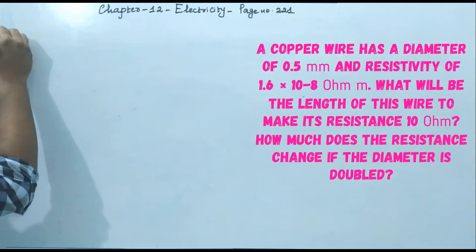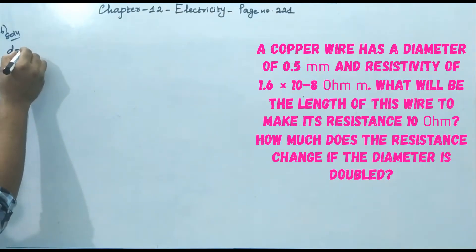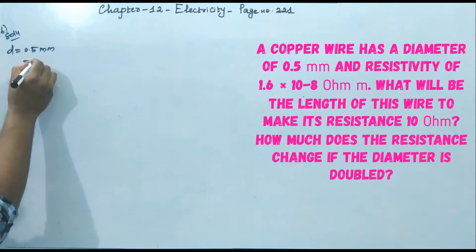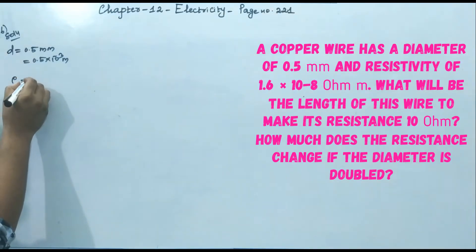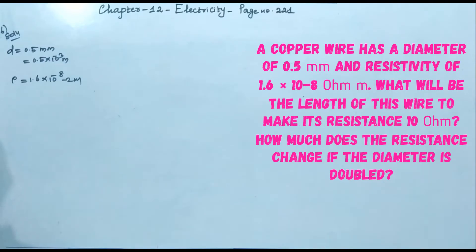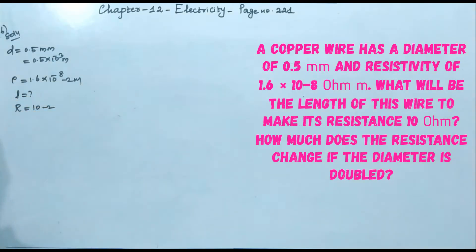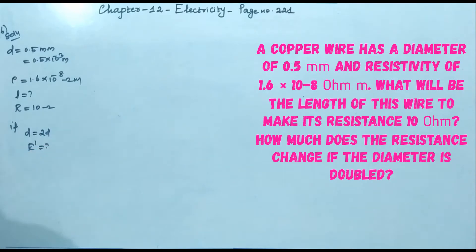In exercise 6, a copper wire has a diameter of 0.5 millimeter, that is 0.5 × 10⁻³ meter. The resistivity rho is 1.6 × 10⁻⁸ ohm meter. We need to find the length of the wire to make its resistance 10 ohm, and determine how the resistance changes if the diameter is doubled.